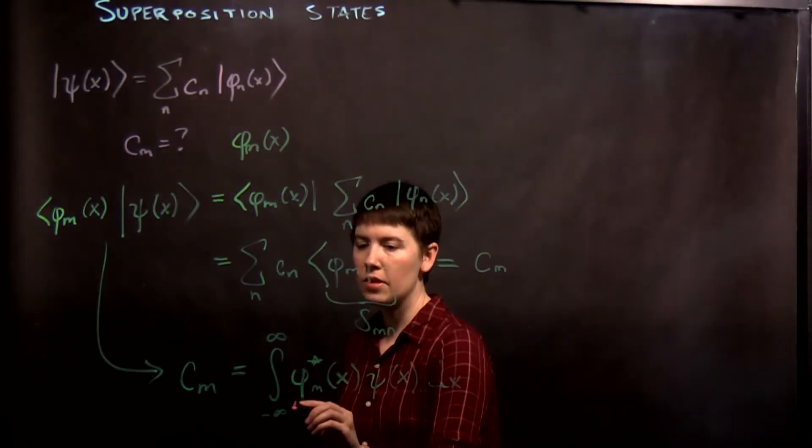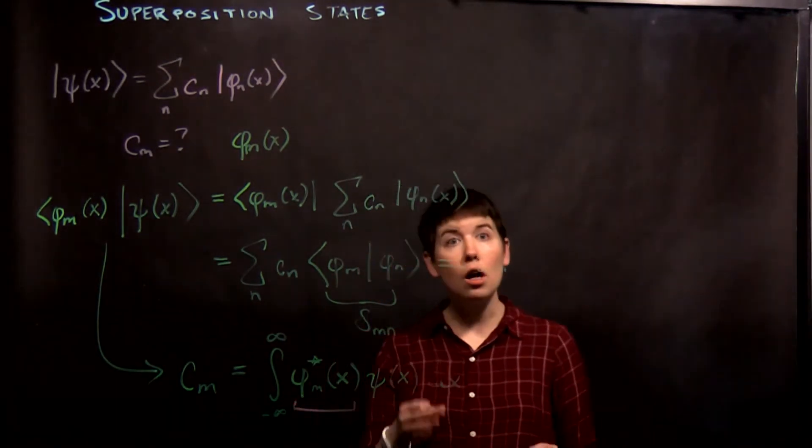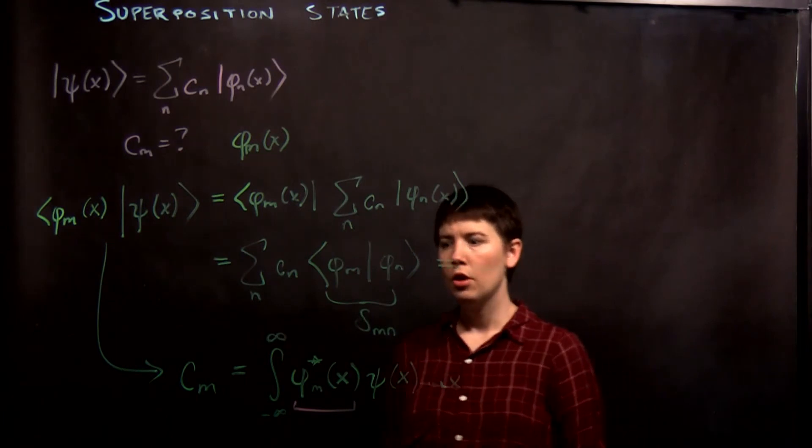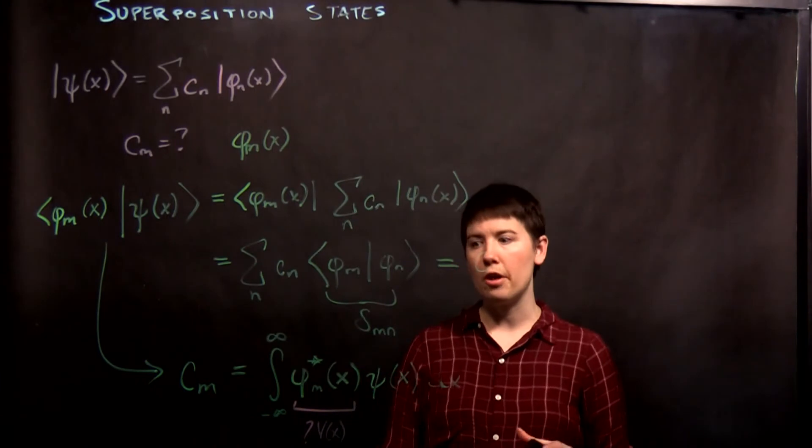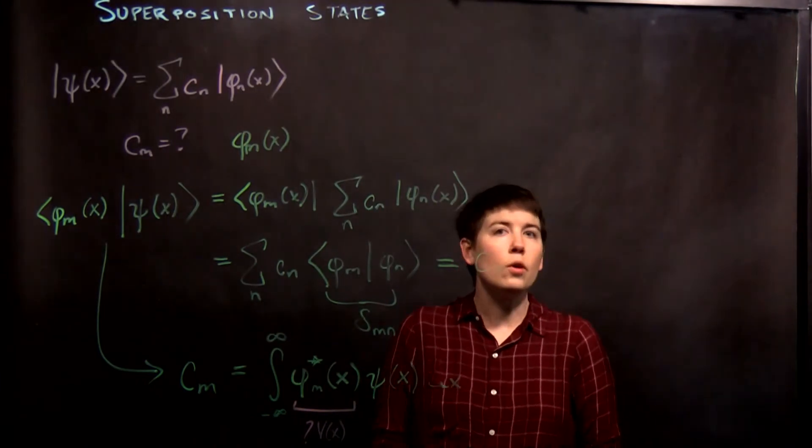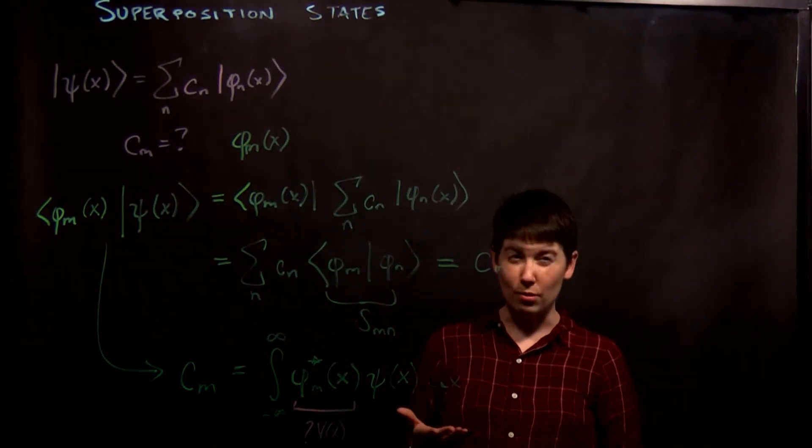So the idea being that we get to calculate what our coefficients are by doing this integral. So keep in mind that this is your energy eigenstate of the system you're talking about. So you have to know what was your potential so that then you could find what your energy eigenstates were. We don't have very many different systems that we use in this class.